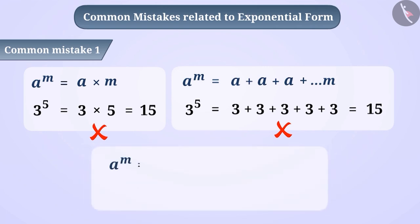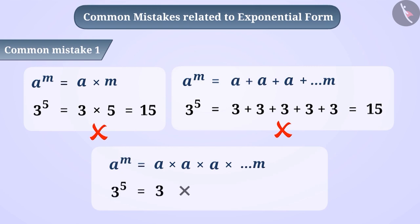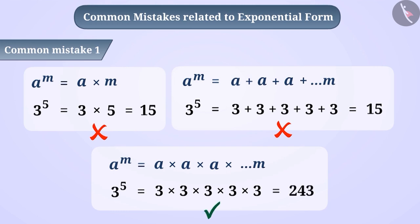The correct understanding is: if you have to calculate the value of a number from its exponential form, then we multiply the base with itself for as many times as the exponent. Here, we multiply 3 with itself 5 times to get the value 243.